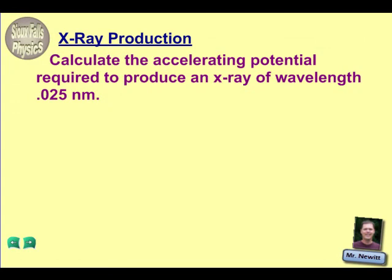Hey, physics students here. We have an x-ray production problem here. We're going to calculate the accelerating potential required to produce an x-ray. We want that x-ray to have a wavelength of .025 nanometers.